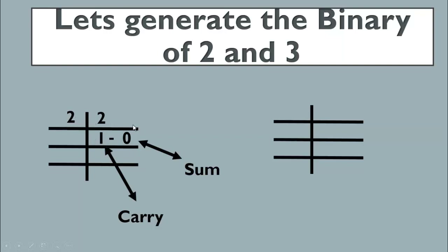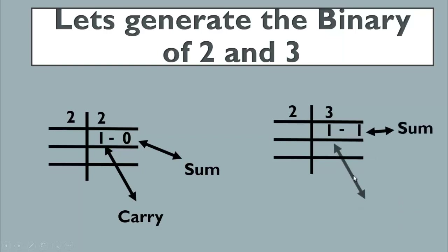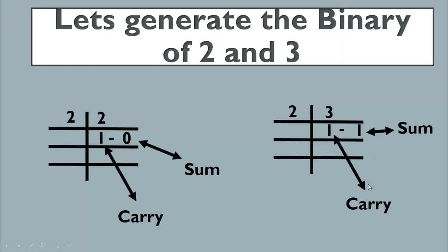Now let's generate the binary of three. Three divided by two gives one remainder. So one goes on the right side as the sum, and one goes on the left side as the carry. This confirms that the binary of three gives us one sum and one carry.